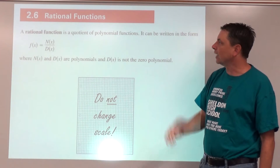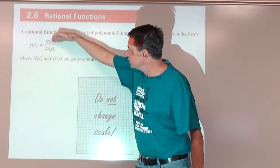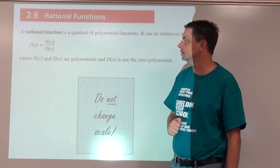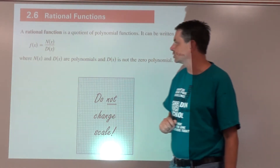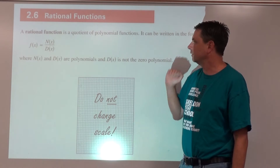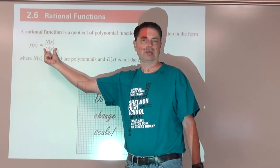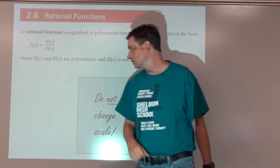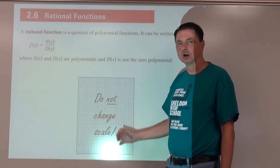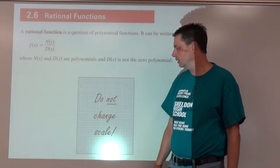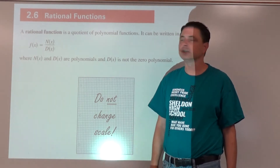Rational functions: a rational function is a quotient of a polynomial function divided by another polynomial function. We have our numerator polynomial function and our denominator polynomial function — that's going to be a rational function as long as the denominator cannot be zero. We can't divide by zero. This is a good time to be using graph paper or provided graphs, and we're not going to be changing scale — everything's by one unit.